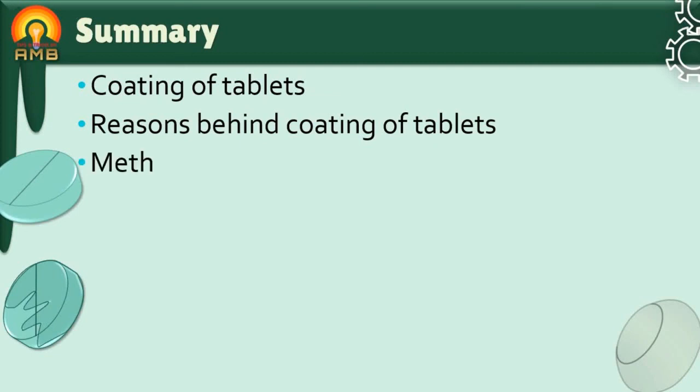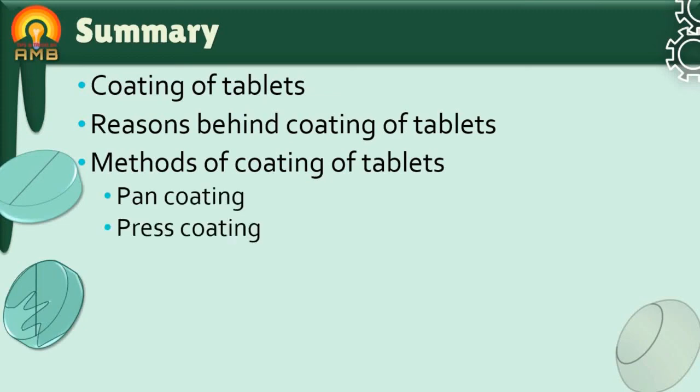Then we discussed that coating can be done mainly by two methods like pan coating and press coating. We discussed all the parts of pan coating apparatus with its working.